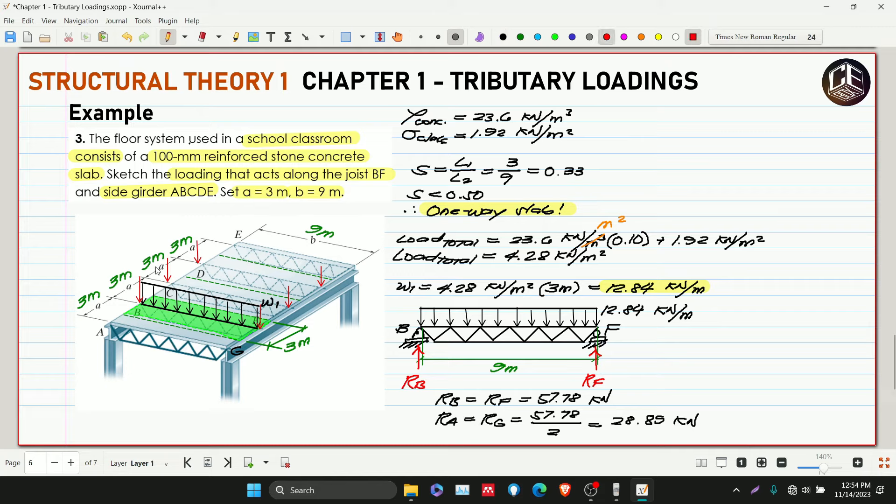So 57.78 divided by 2 is half, which is 28.89 kilonewtons. This is the value. Let's call this P1, or let's just put 57.78. This is for A and E, and also here. Let's change the color to orange. This is now our 28.89 kilonewtons.